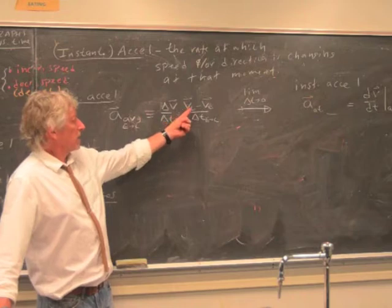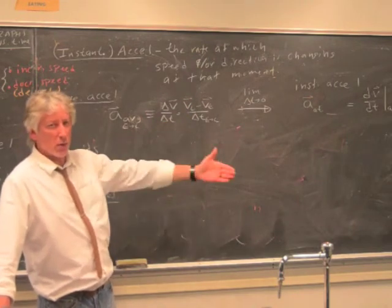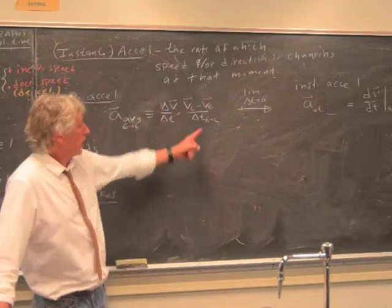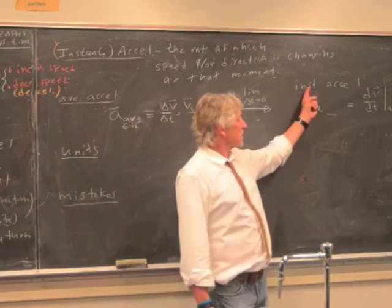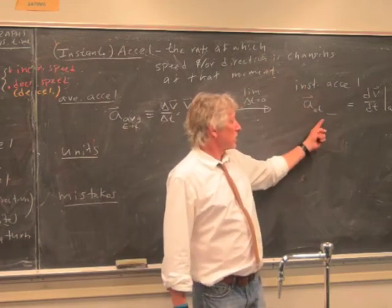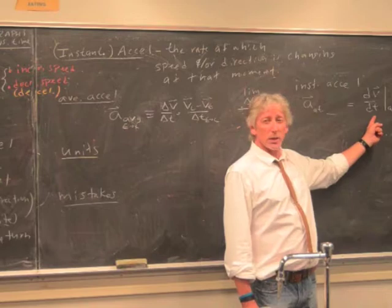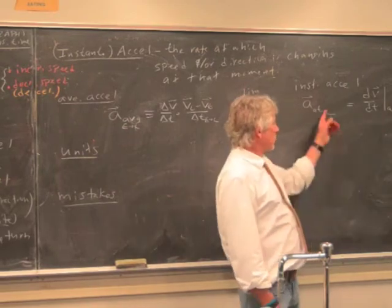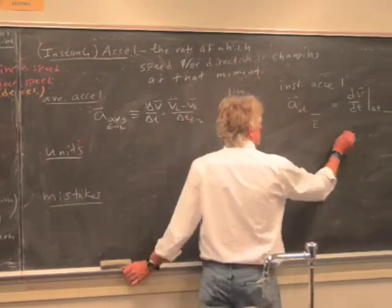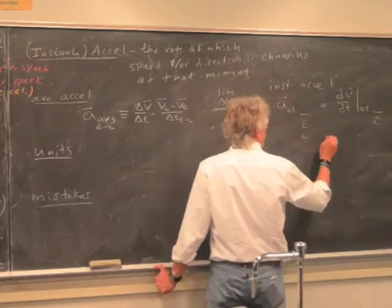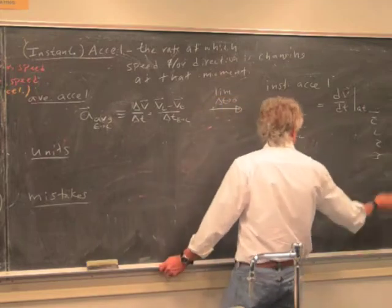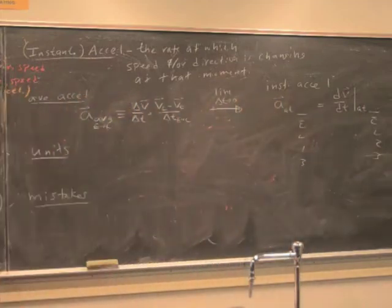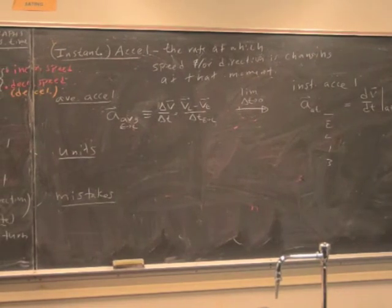Remember that the velocity can be positive or negative, depending on which way you chose to be positive or negative. In the limit as delta-t goes to zero, at a particular instant, the acceleration is defined as the derivative dv/dt at whatever time — at state one, state three. That's how we mathematically write that in symbols.